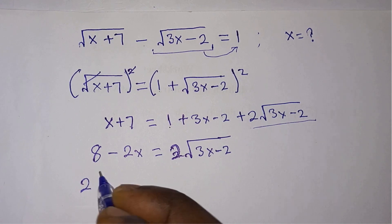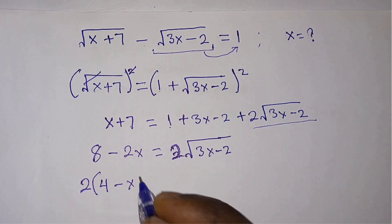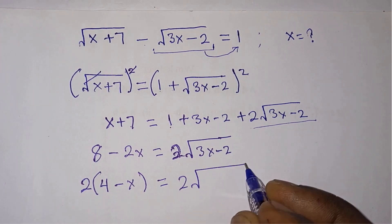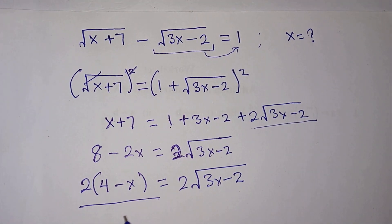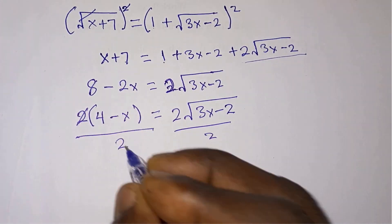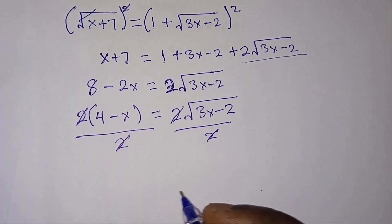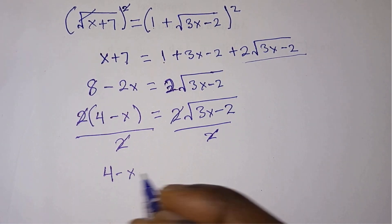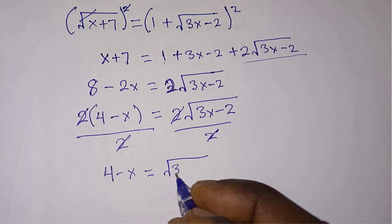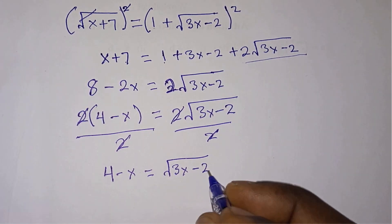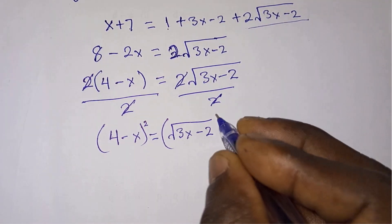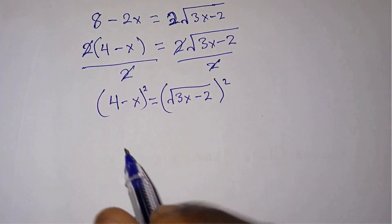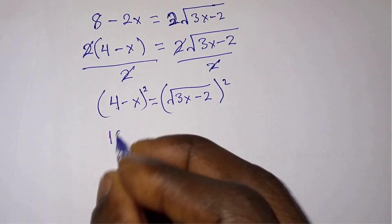Now we can reduce the values in this equation. Let's factor 2 out: we have 2 times (4 minus x) is equal to 2 square root of 3x minus 2. Then we divide each side of the equation by 2, so we have 4 minus x is equal to square root of 3x minus 2. Again, we will square each side of the equation to remove the square root.